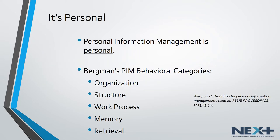One of the most important things to remember about personal information management is that it is very personal. What works for one person may not work for another, and vice versa. Successful information management requires that you become aware of your personal style. In the article Variables for Personal Information Management Research, Berkman defines five categories that help shape how individuals approach information management. You can think of these categories as having a continuum from one approach to the opposite approach, with neither approach being a preferred behavior.